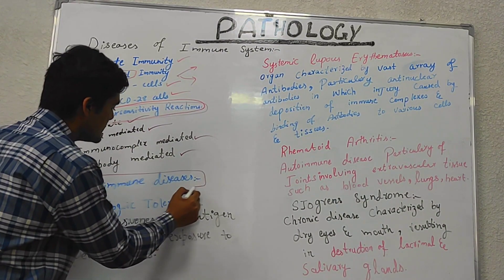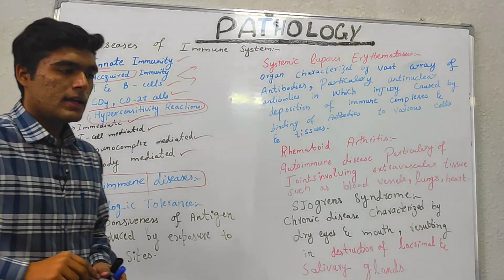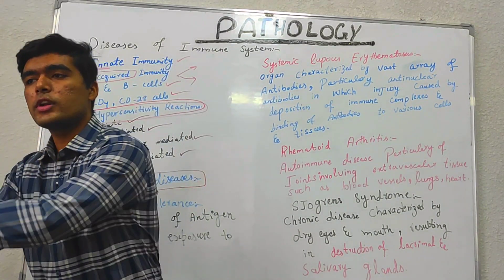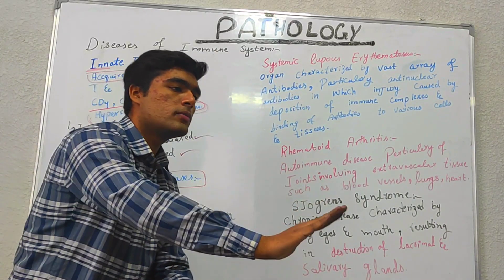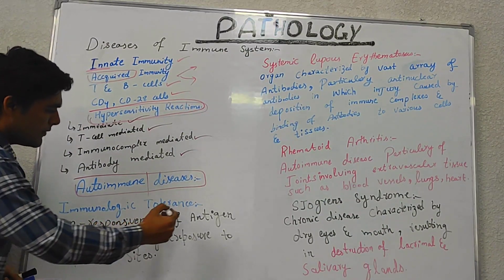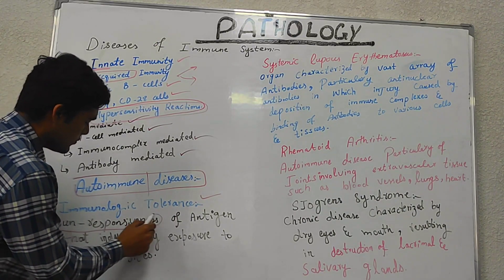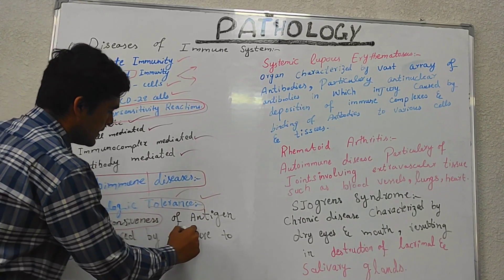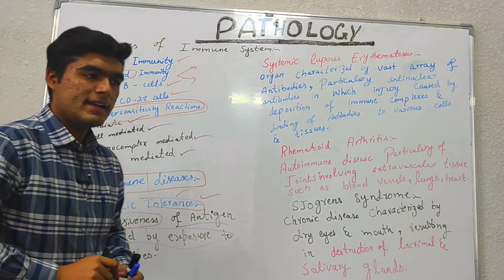We have autoimmune diseases. Focus on this word 'autoimmune' — in these diseases, our own antigens attack our own immune system. First is immunological tolerance, in which there is unresponsiveness of an antigen, as the word tolerance depicts — induced by exposure to the specific antigen, the antigen is unresponsive.